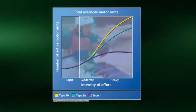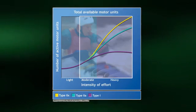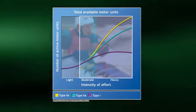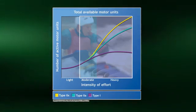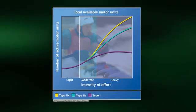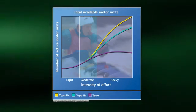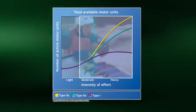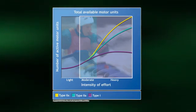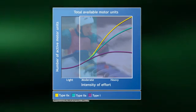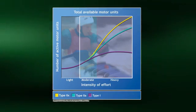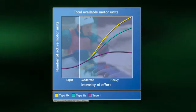Please notice that even at the higher workloads, the type 1 fibers are still being recruited. At the highest workload, we are dependent upon type 2X fibers to provide the necessary power required, but we will not be able to maintain this intensity for very long, as the 2X fibers will soon fatigue.